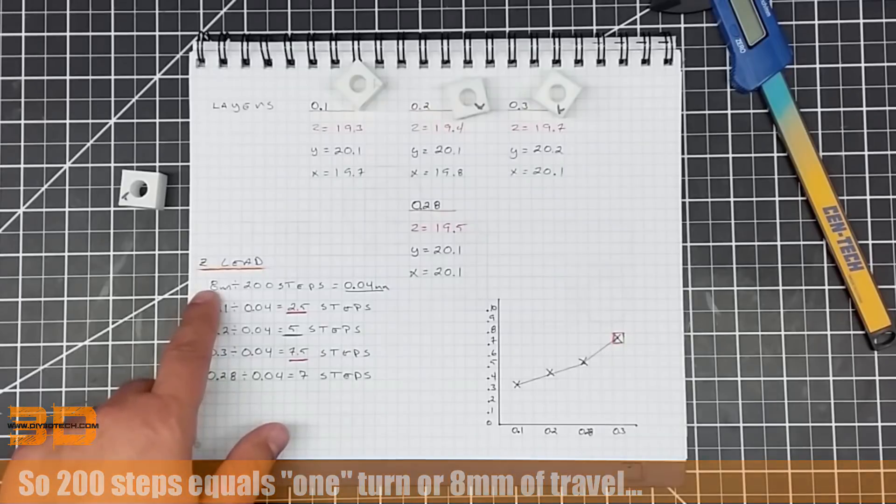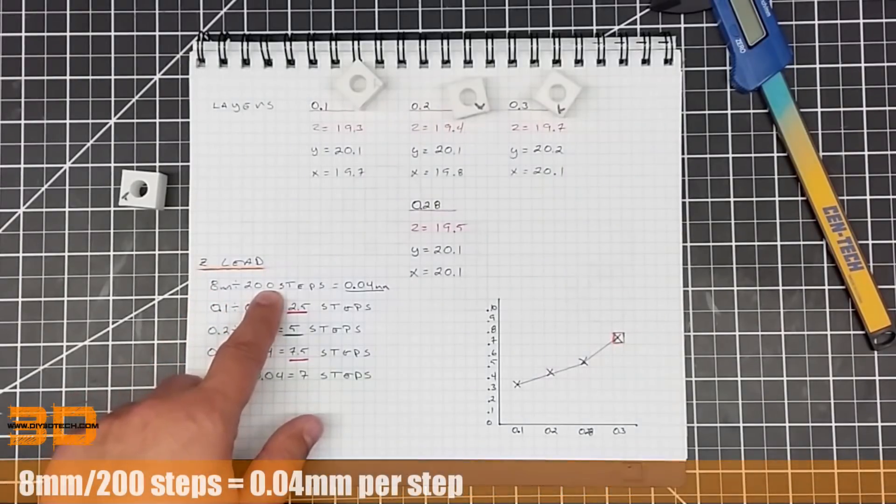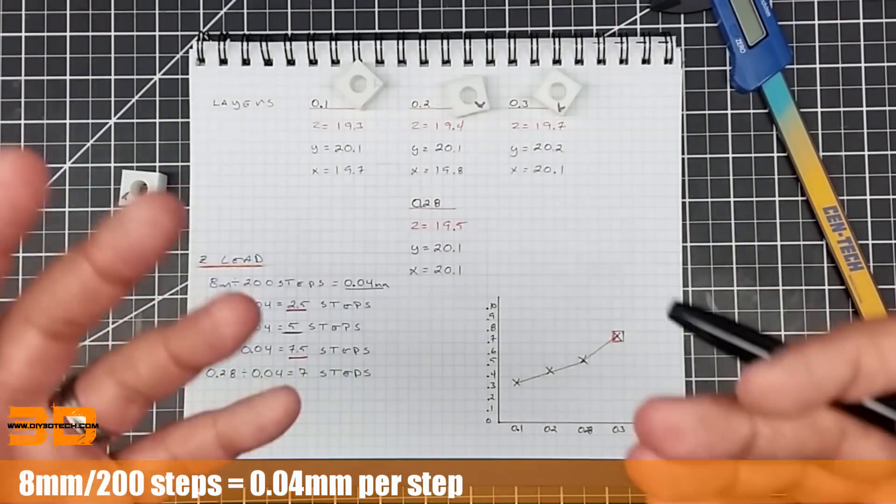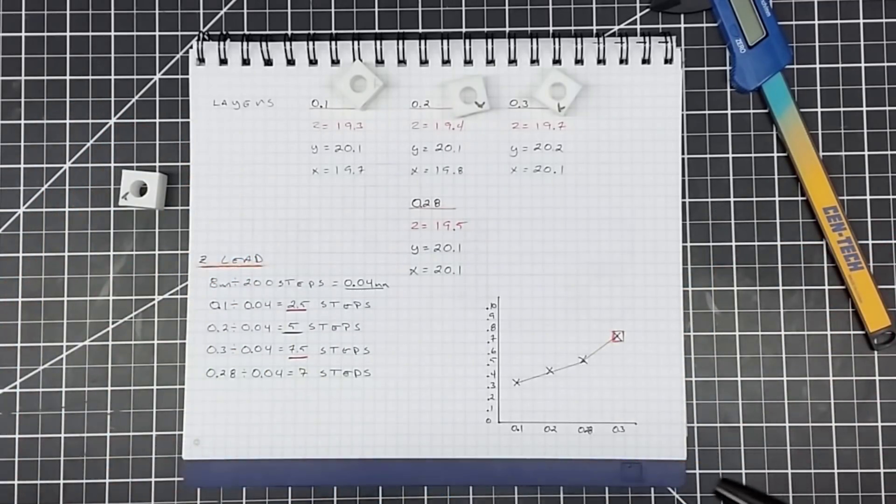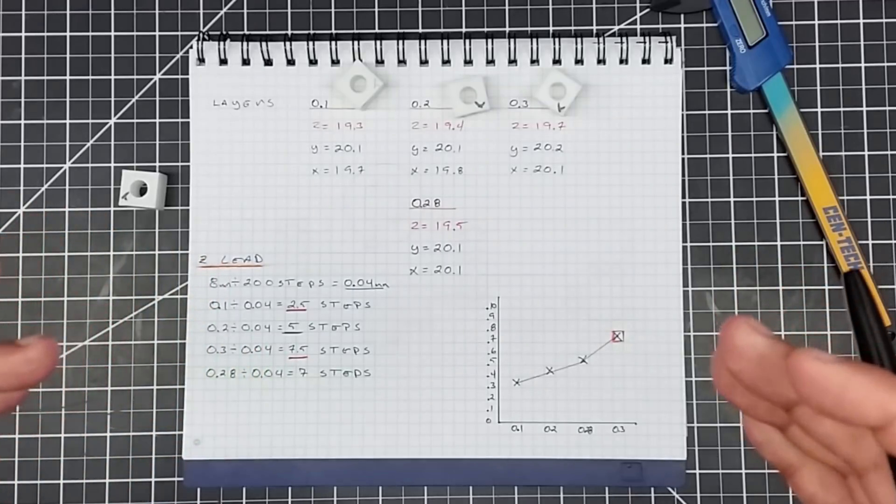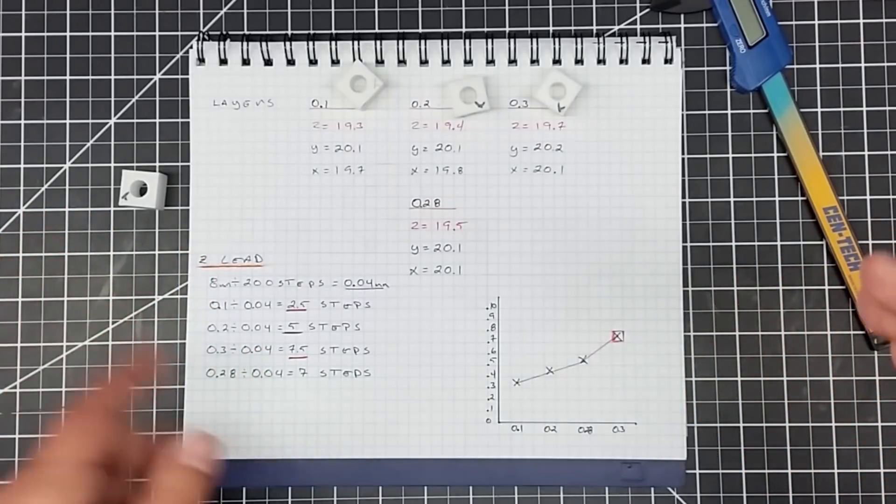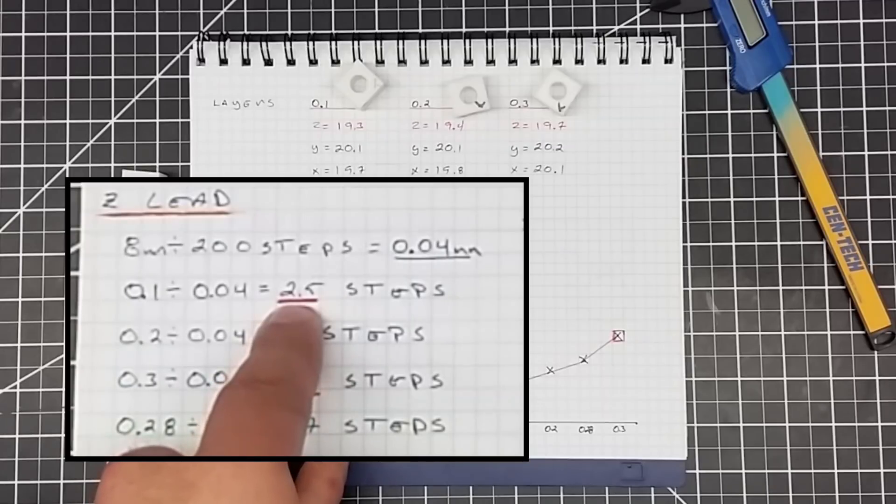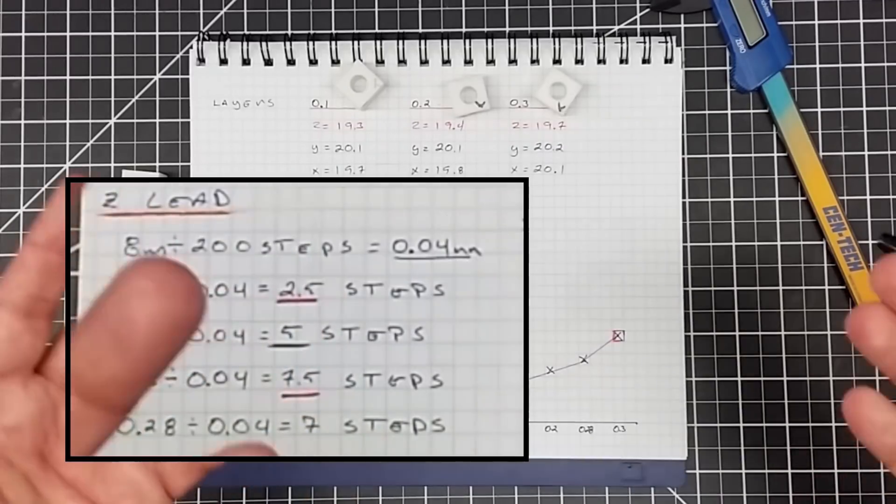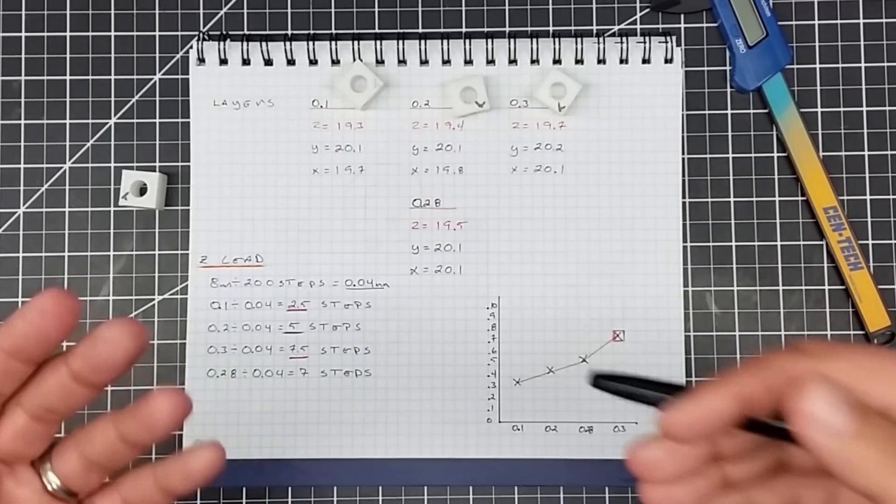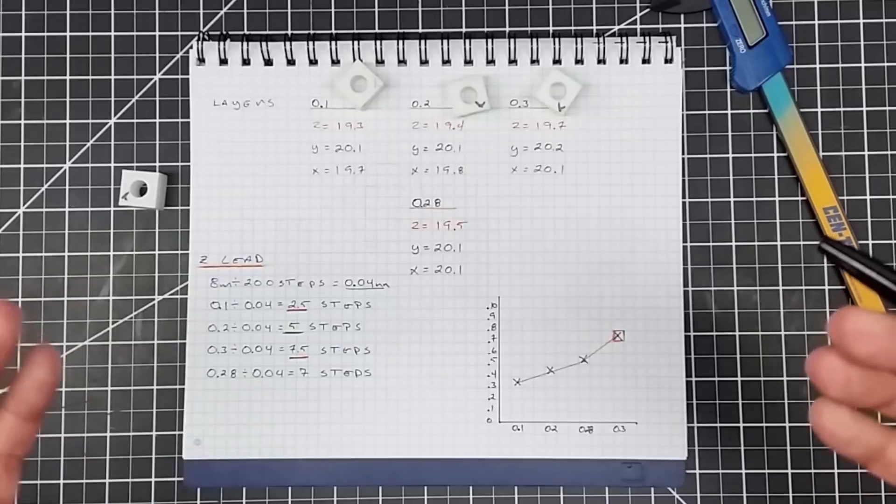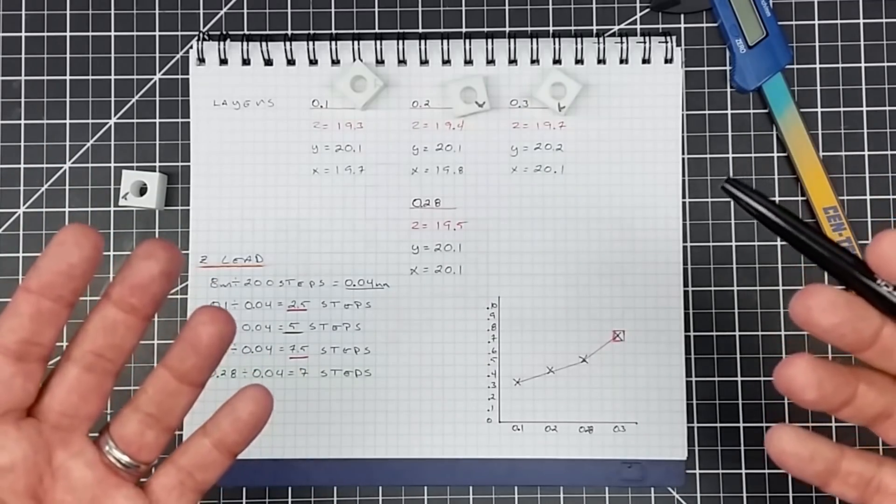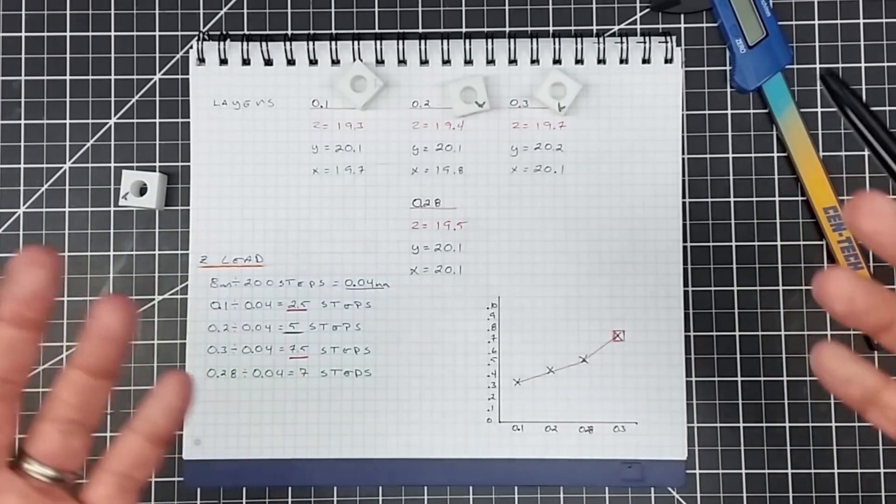Now, very important, a stepper motor cannot make a half a step. It must make a full step. And so this is the important part. So when we now begin looking at the measurements, so if I take 0.01 millimeters divided by 0.04, that equals 2.5 steps. The Creality cannot make, or any stepper motor for that matter, cannot make 2.5 steps. It's got to make two steps or it's got to make three steps. So I have an error now in this. My firmware has to do something with this information it's being given because it cannot complete it. So it's either going to have to add or throw away steps.